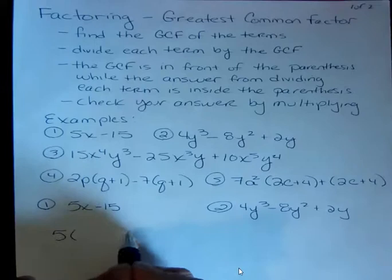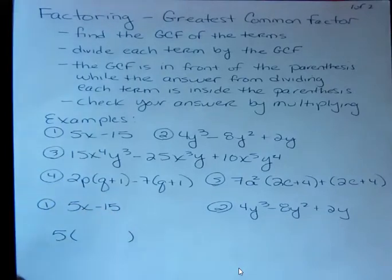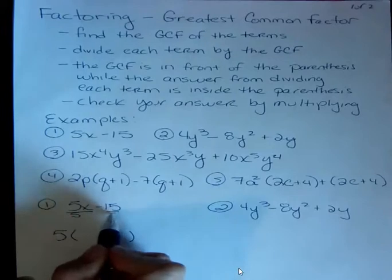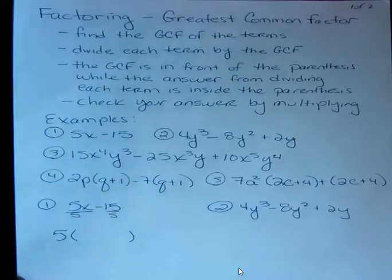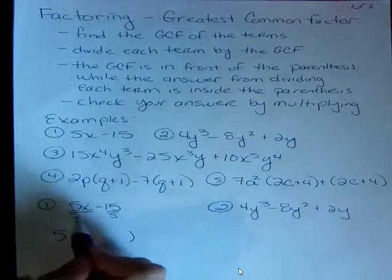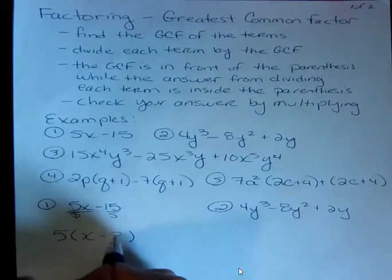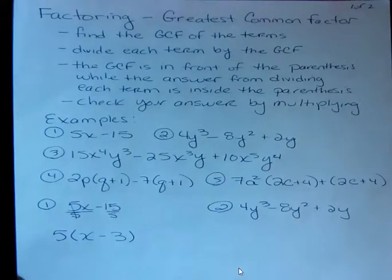And then inside the parentheses is what I get when I divide. So I'm going to divide each term by 5 because that was the GCF. 5 over 5 cancels, that leaves x.